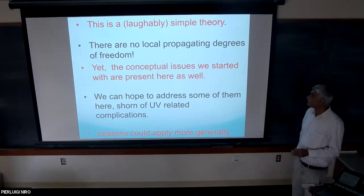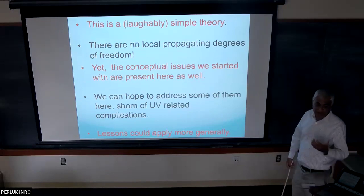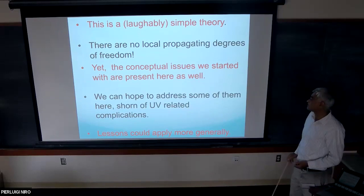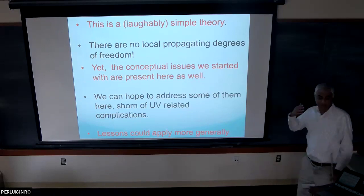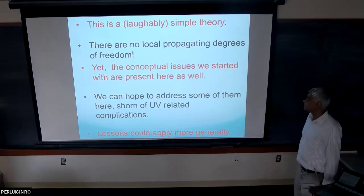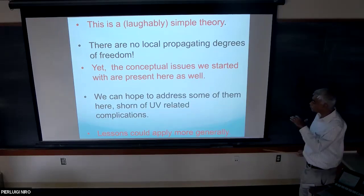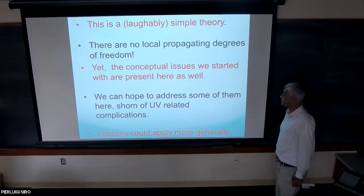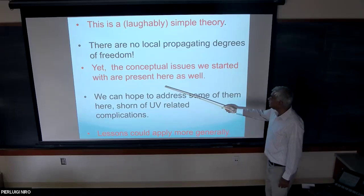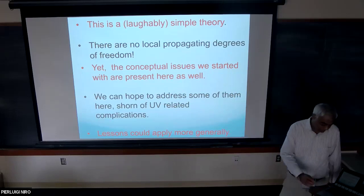This is a very simple, laughably simple theory. There are no local propagating degrees of freedom — no gravitons in two dimensions — so it's a very, very simple theory. Yet many of the conceptual questions I mentioned at the start are present here as well: how do you choose a good clock? What are observables? One can hope to address some of them in this simpler setting, shorn of all the complications pertaining to the UV that arise if you have gravitons.